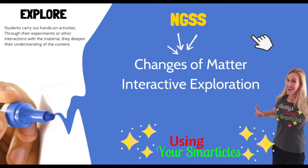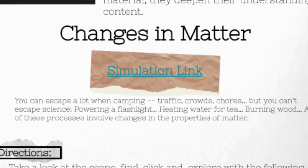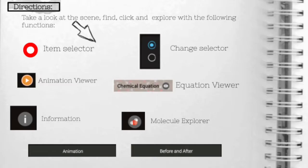Today we're going to be using an interactive to explore two types of changes that take place in matter. This is the notebook page we'll be using for our exploration. If you click on the word simulation on the page it will take you to the interactive. If you don't have access to the notebook page, here's the URL to the interactive that we're going to be working with today. Once you open the link and take a look at the interactive, I'd like to bring your attention to all of these important functions, as you'll be using them all throughout the course of your exploration.